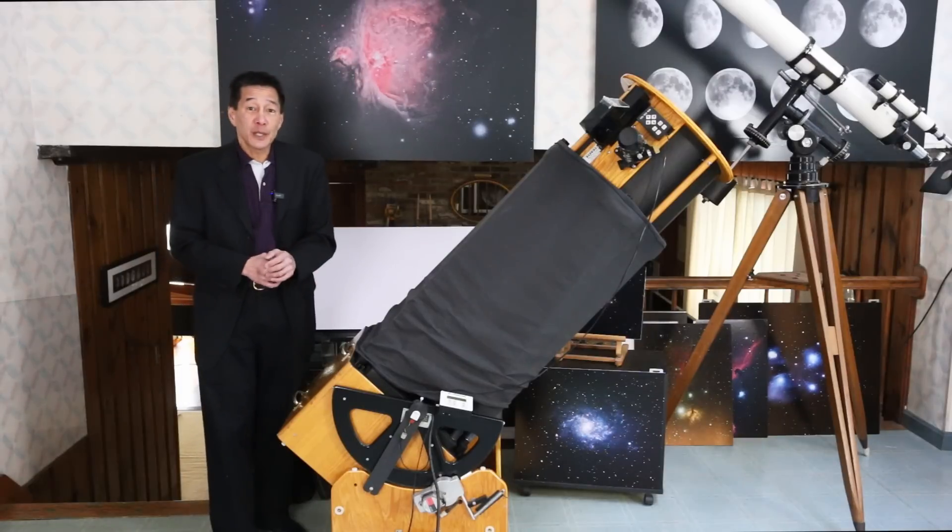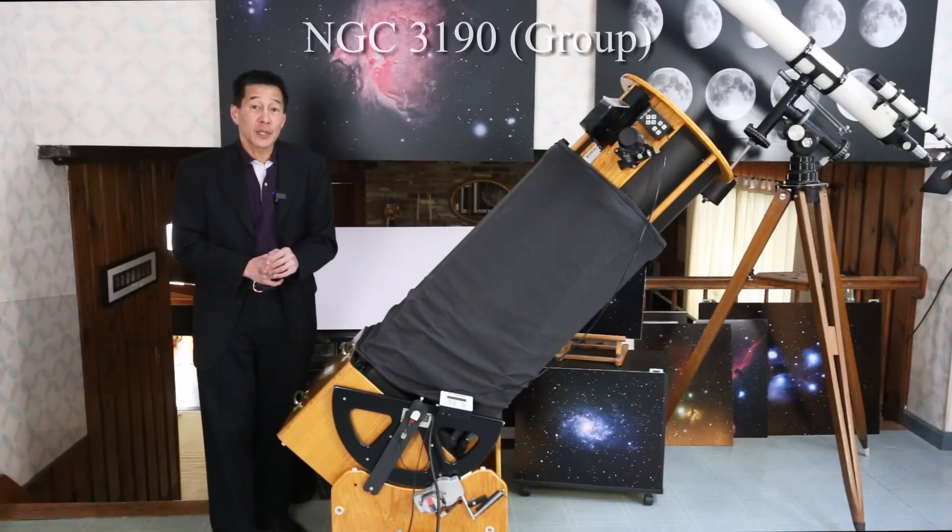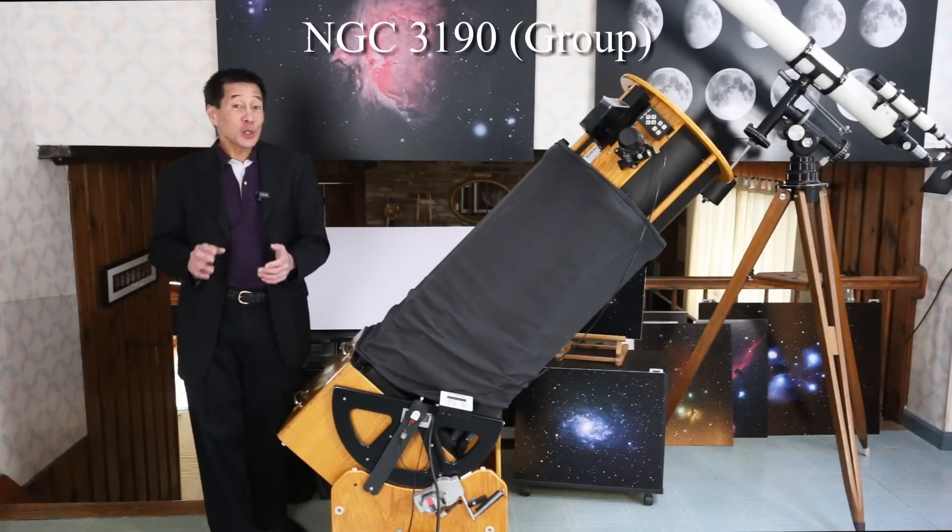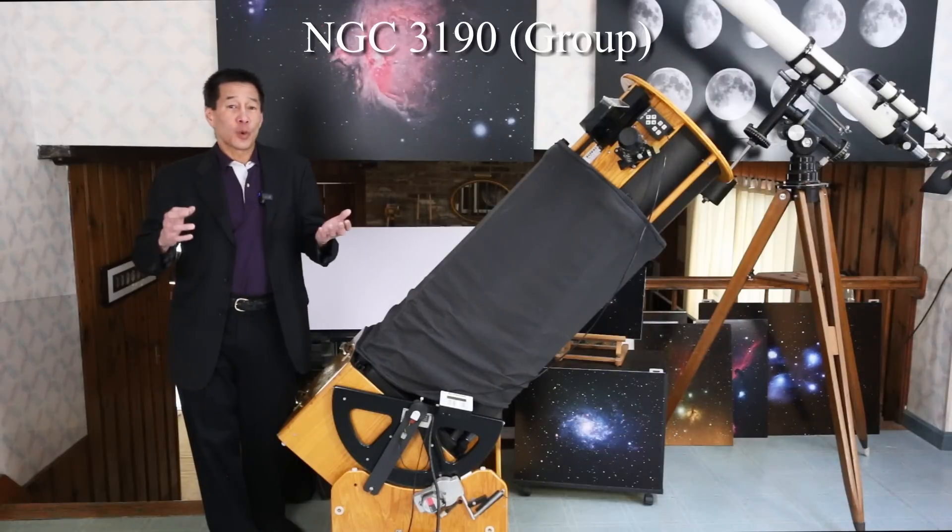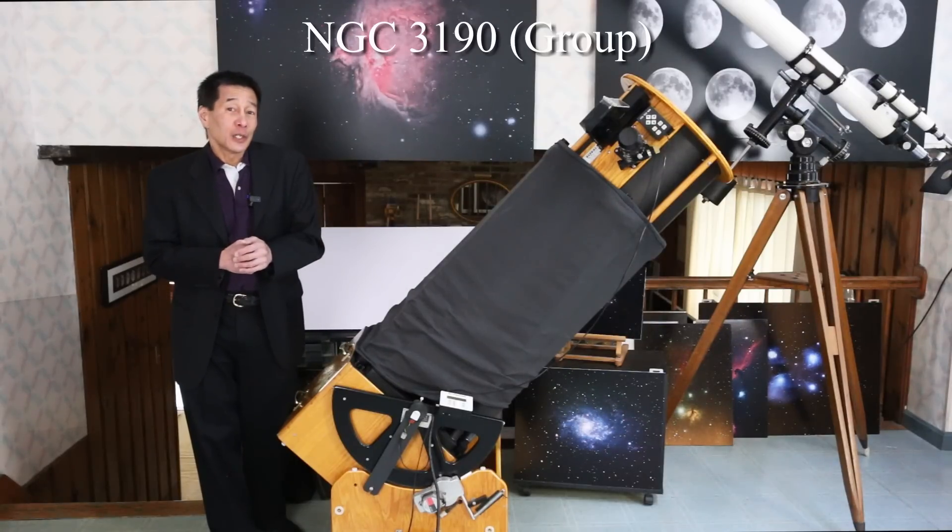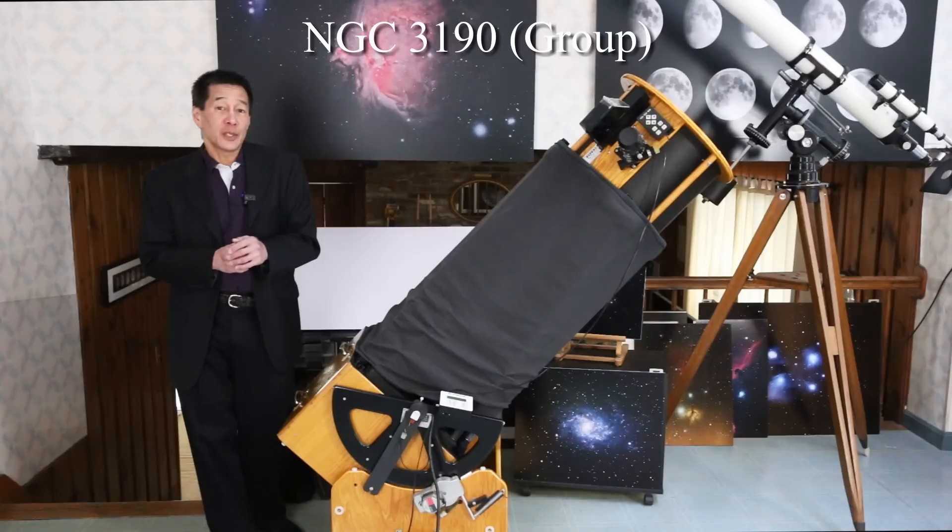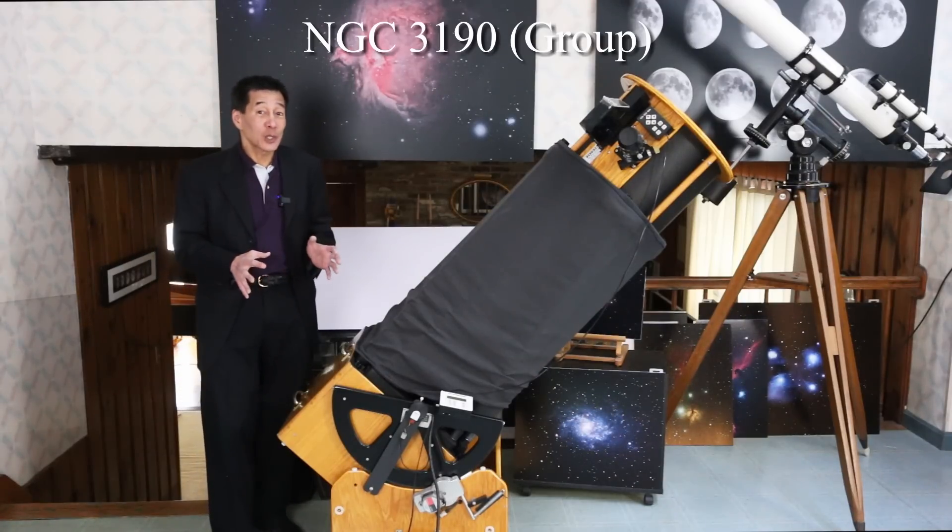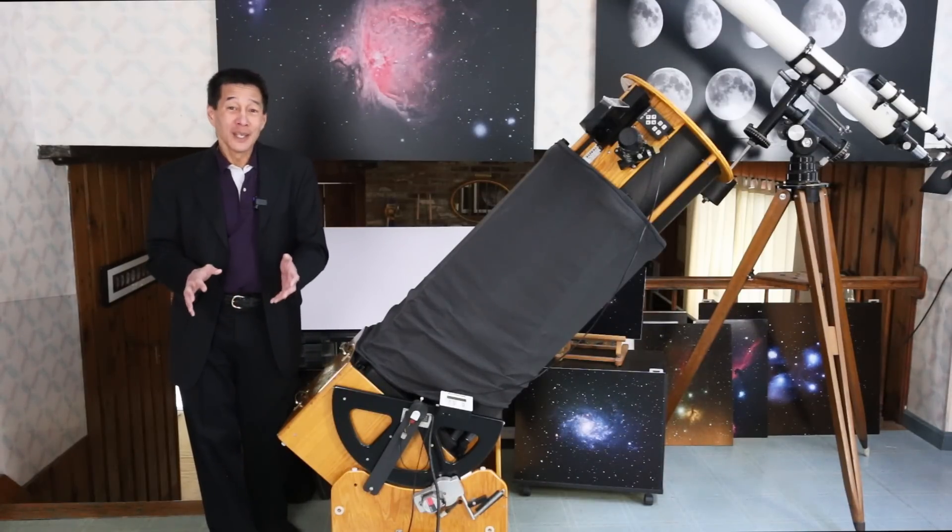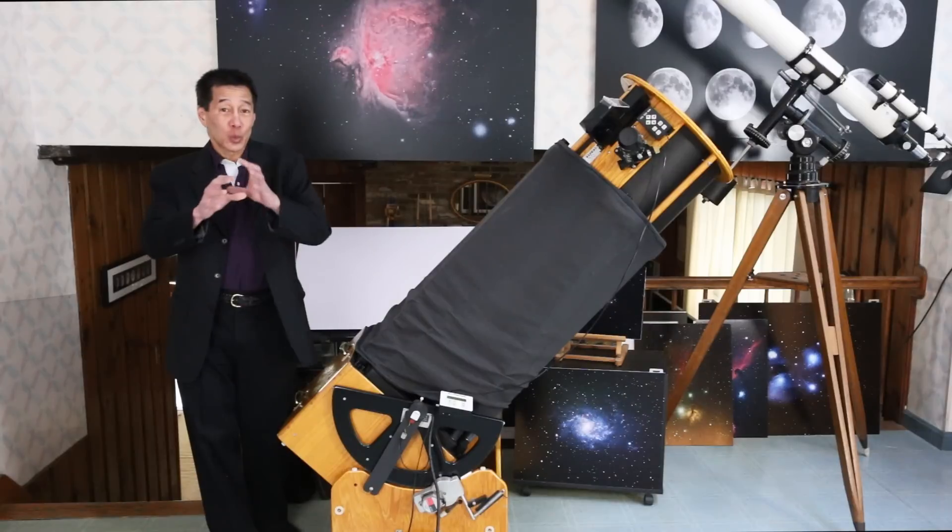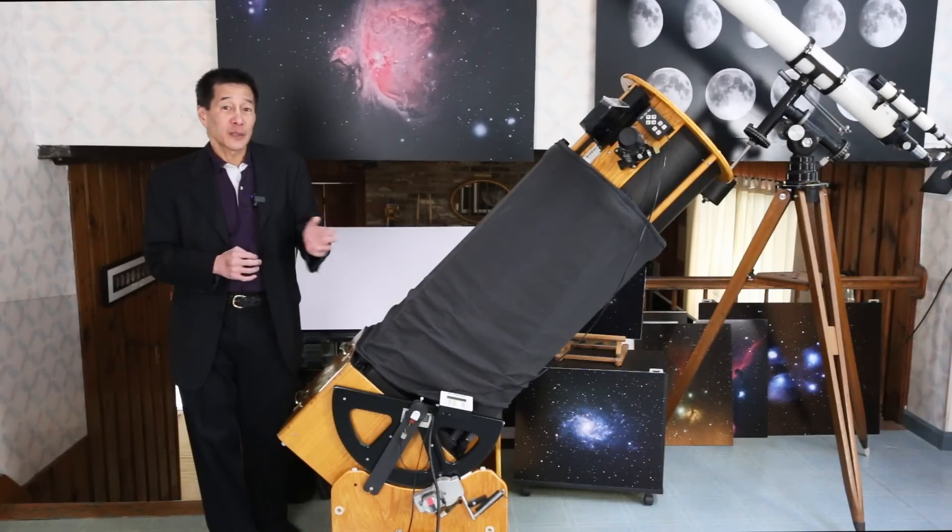Another example is the NGC 3190 galaxy in Leo. You can usually tell about what size telescope a person has by how they refer to that object. If you've got a four or six or eight-inch telescope, you probably refer to that as the NGC 3190 galaxy. If you've got a bigger telescope, you tend to refer to it as the NGC 3190 galaxy group. There are at least four galaxies really tightly intertwined. I was looking at those the other day. Really pleasing view through this telescope.